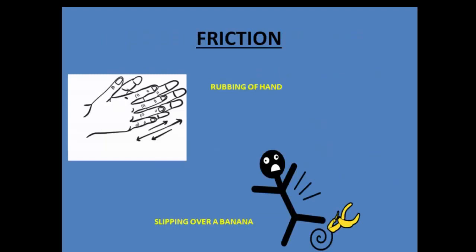Here are a few examples of how friction is produced. A very common example is rubbing of hands — when we rub both hands together, friction is generated which produces heat. That is why after rubbing our hands for a long time, we feel warmth. Another common example is a person slipping on a banana peel, because the surface of a banana is very smooth, and over a smooth surface friction is very less, causing people to slip.